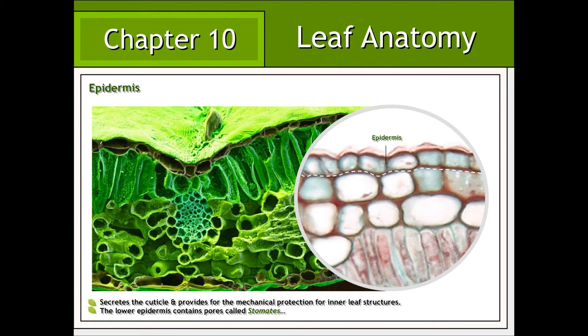The epidermis represents the outermost cell layer associated with the plant body. With respect to the leaf structure, it is found on both the upper and lower surface and consists of cuboidal or cube-shaped cells. It is the epidermal cells that produce and secrete the waxy cuticle that waterproofs and covers all aerial parts of the plant body.